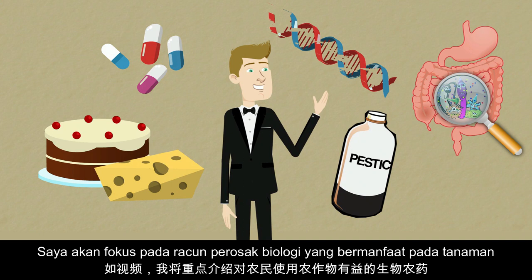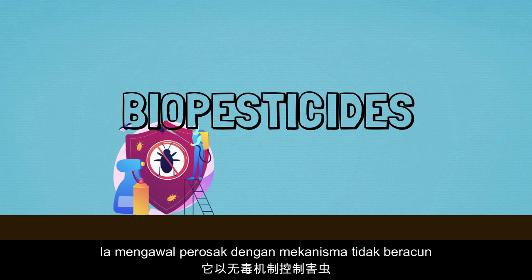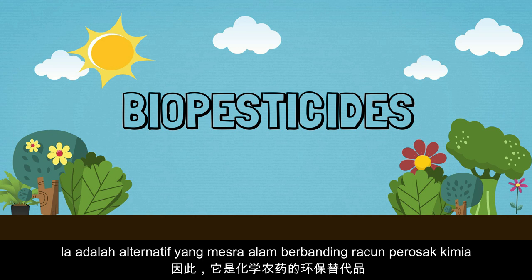In this video, I will focus on the biopesticides that are beneficial for farmers to use on their crops. Biopesticides are naturally occurring substances for controlling pests by non-toxic mechanisms. Therefore, it is an eco-friendly alternative to chemical pesticides, which are safer to the environment and to human health.